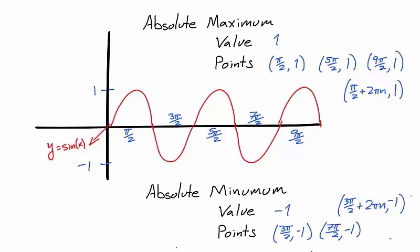No attained y value is higher than it. But the x values π/2, 5π/2, 9π/2, and in general, π/2 + 2πn all attain the y value 1. In the same way, the absolute minimum value is -1, and the x values 3π/2 + 2πn all attain that y value.